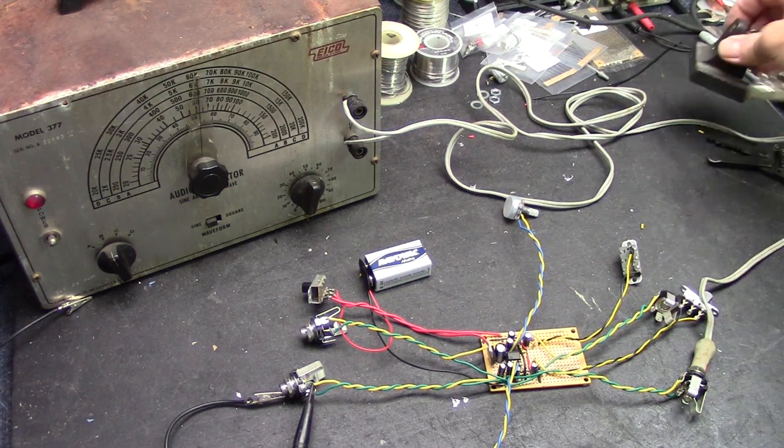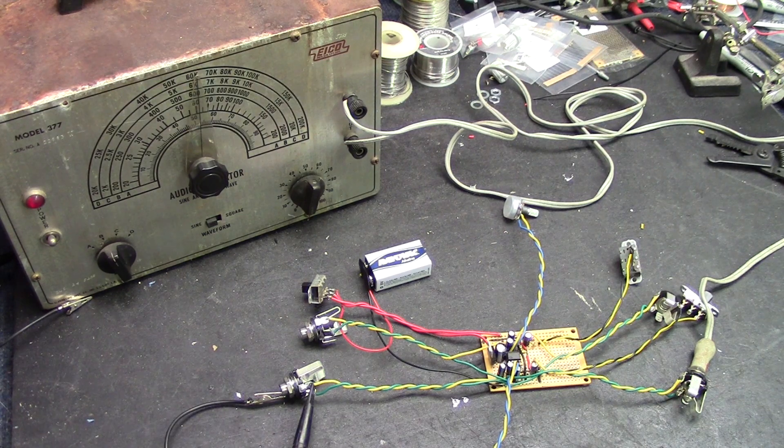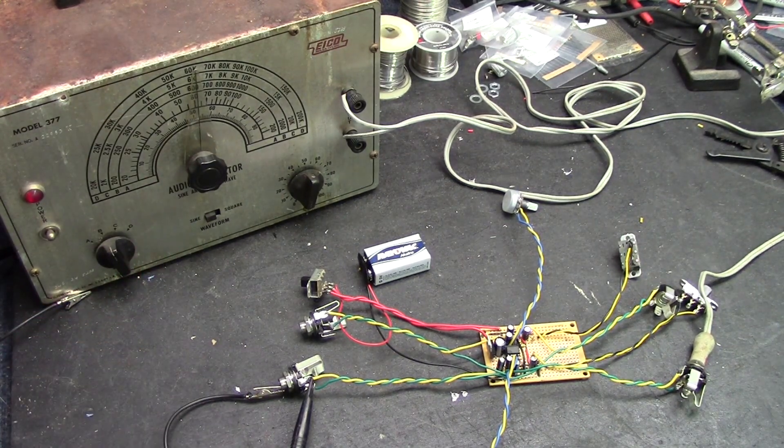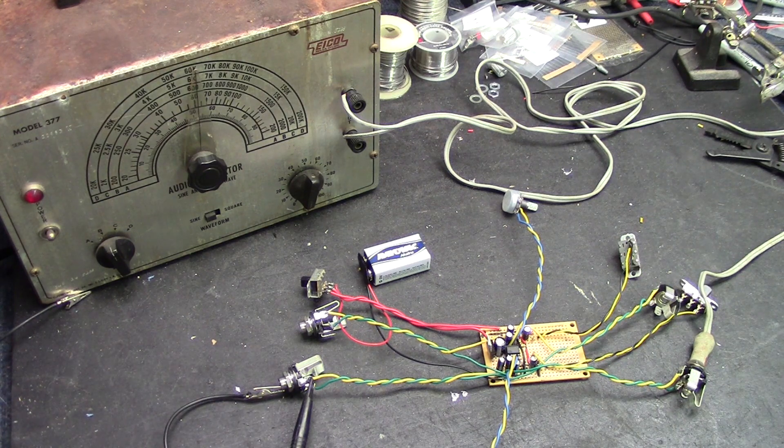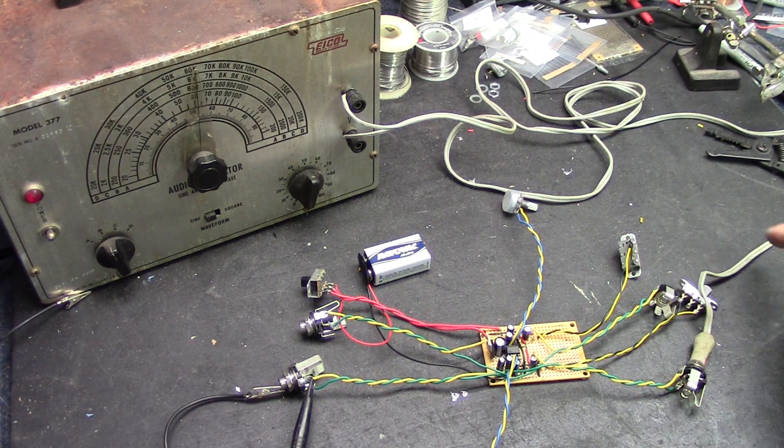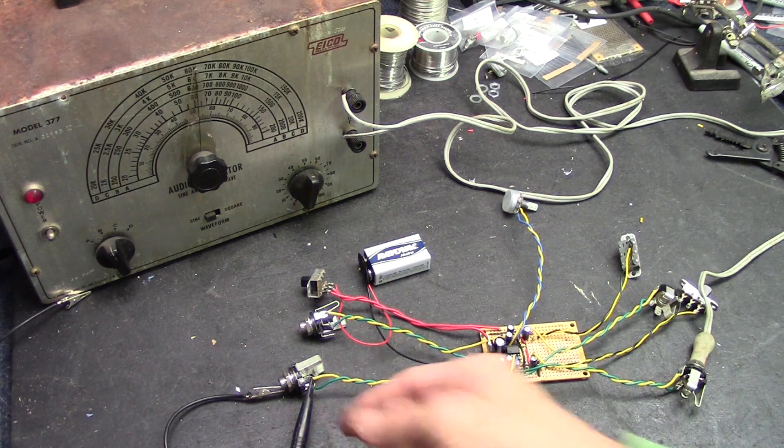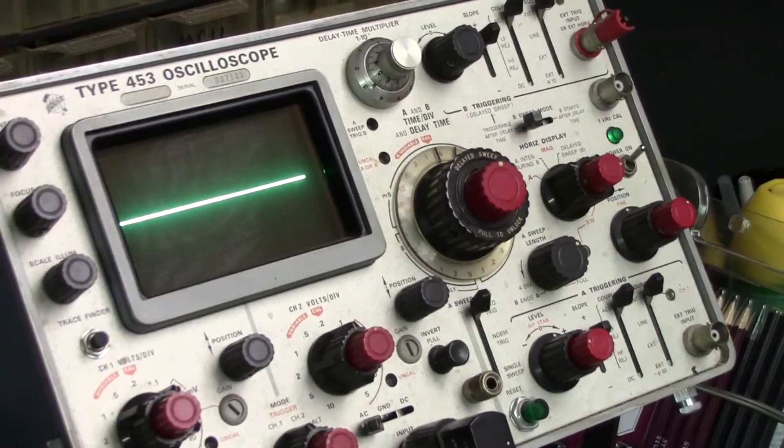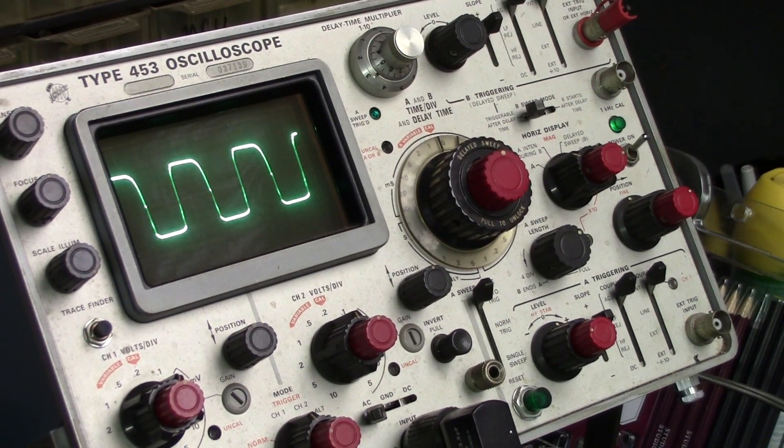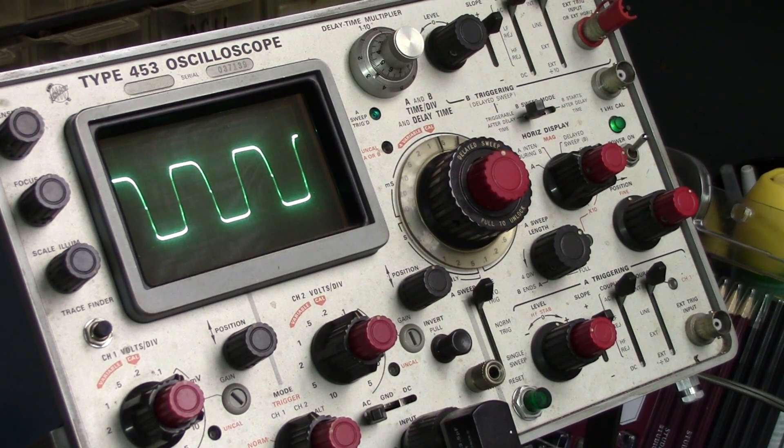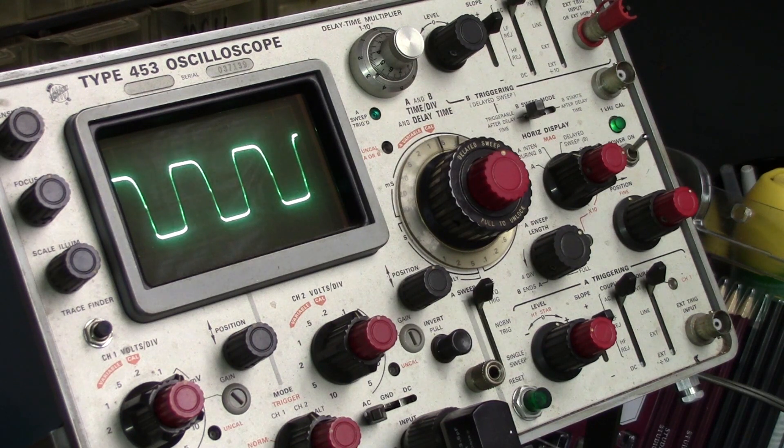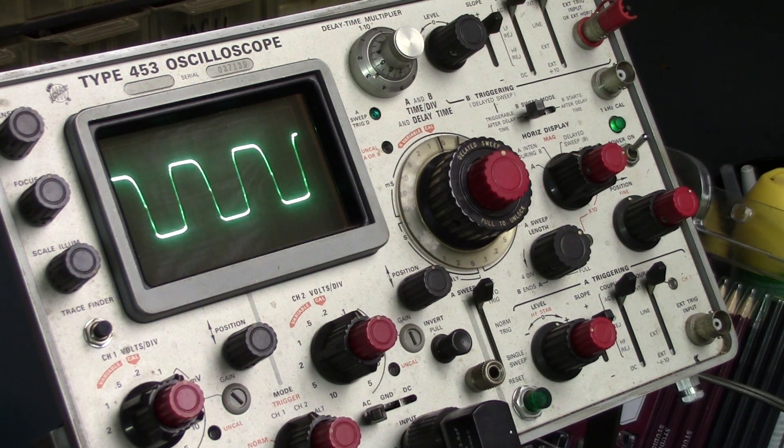We're all set for testing. In fact, it's running right now. You can't hear anything because what I have is just a sine wave going through it from my old model 377 ICO signal generator. Putting out a sine wave right now. And I've got it running in here on, let's call it channel one. And I've got that hooked up to the scope over here. My Tektronix 453. We'll zoom in a little. I'm going to turn up the volume now. And you see there's a sine wave.